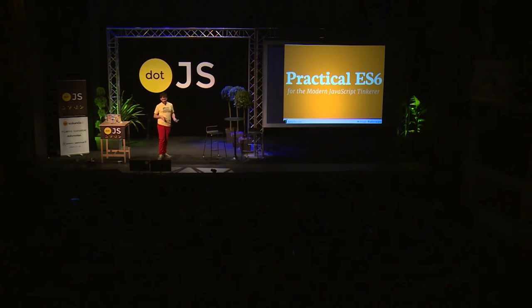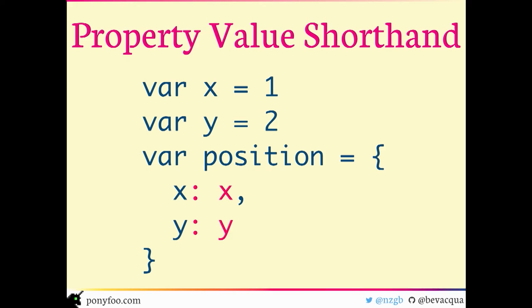The first thing we're going to talk about is object literals, literally. The first feature is property value shorthands, and this really means that if you have a property that has the same name as a variable you want to assign to it, you can just get rid of the right-hand side in ES6.